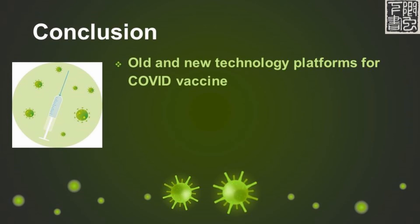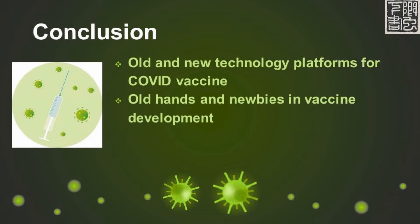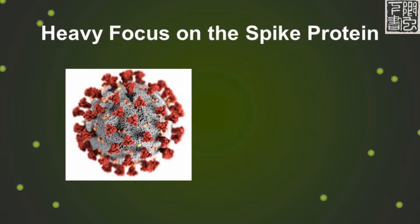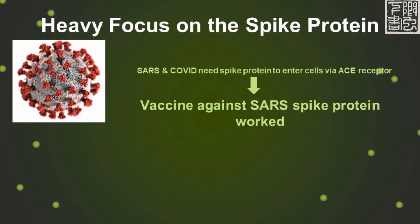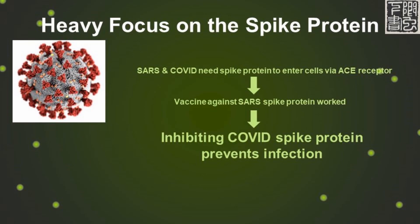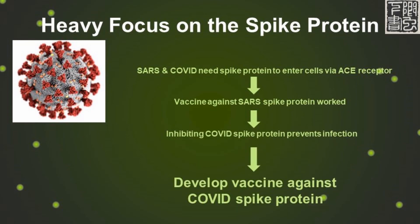In summary, there are established as well as new and unproven technologies being used for COVID vaccine development. While some companies have lots of experience in vaccine development, especially with SARS or MERS, many other companies just pivoted to COVID or viruses recently. A lot of vaccines are being developed against the same spike protein on the surface of COVID. The reasoning is that SARS and COVID both need their respective spike protein to enter cells via the ACE receptor, and previous SARS vaccine against the SARS spike protein was promising. There's data showing that inhibiting the interaction between the COVID spike protein and the ACE receptor on human cells inhibited infection. Therefore, a vaccine against the COVID spike protein is likely to succeed.